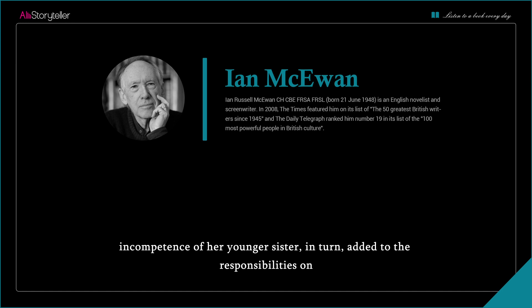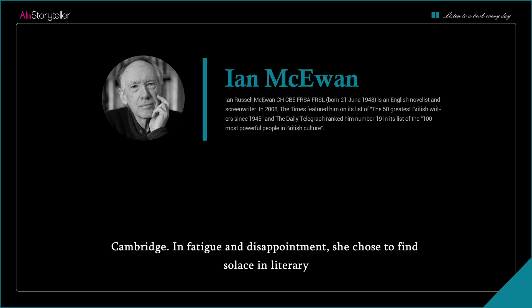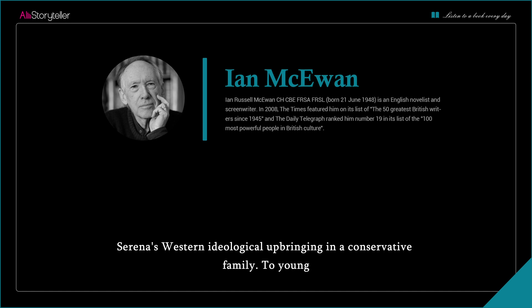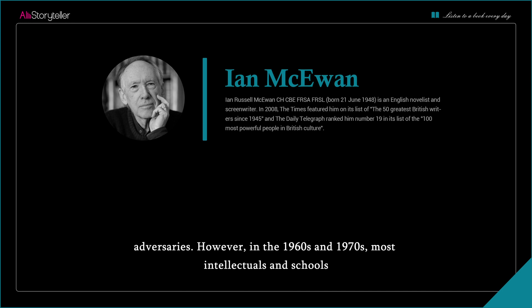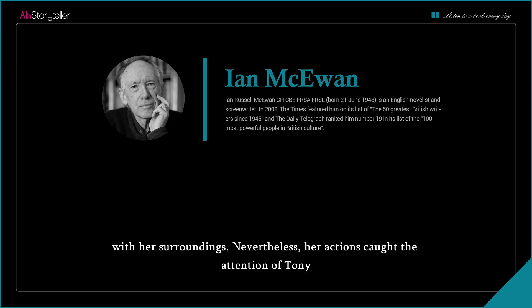The incompetence of her younger sister added to the responsibilities on the shoulders of the obedient Serena. After arriving at Cambridge, she discovered that her mathematical talent was only sufficient for excelling in secondary school, and she couldn't cope with a world-class university. In fatigue and disappointment, she chose to find solace in literary works and gradually became enamored with the writings of Soviet writer Solzhenitsyn. Solzhenitsyn's indictment of the Gulag labor camps resonated with Serena's Western ideological upbringing. To young Serena, the Cold War had only two possible outcomes—victory or defeat—with the East and West as irreconcilable adversaries.